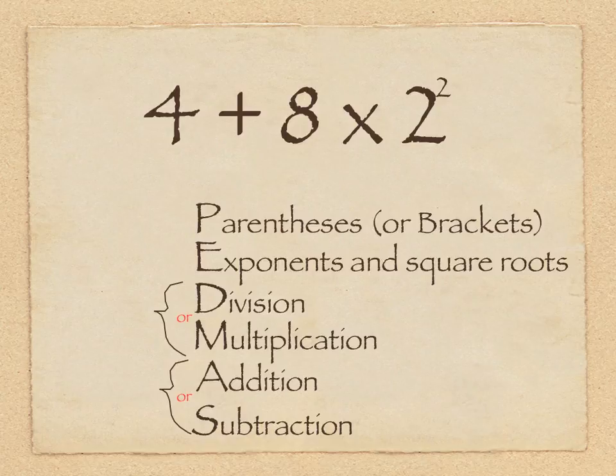So really that's what it's saying is, well there was no parentheses, so next we have to do the exponents and square roots. And there is one, so we have to do that first. After that operation is performed, then we're going to move on to division or multiplication, and then addition or subtraction. So let's look at that in practice.